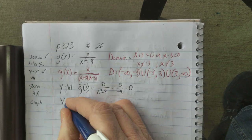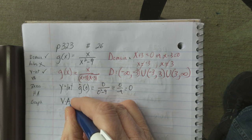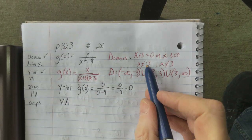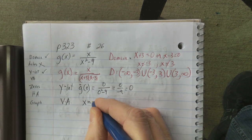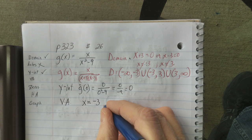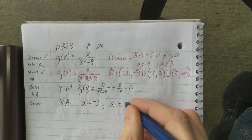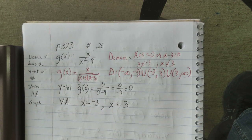Vertical asymptotes. We will have, we've kind of already done that. x equals negative 3 is one of the vertical asymptotes. And x equals positive 3 is the other vertical asymptote.